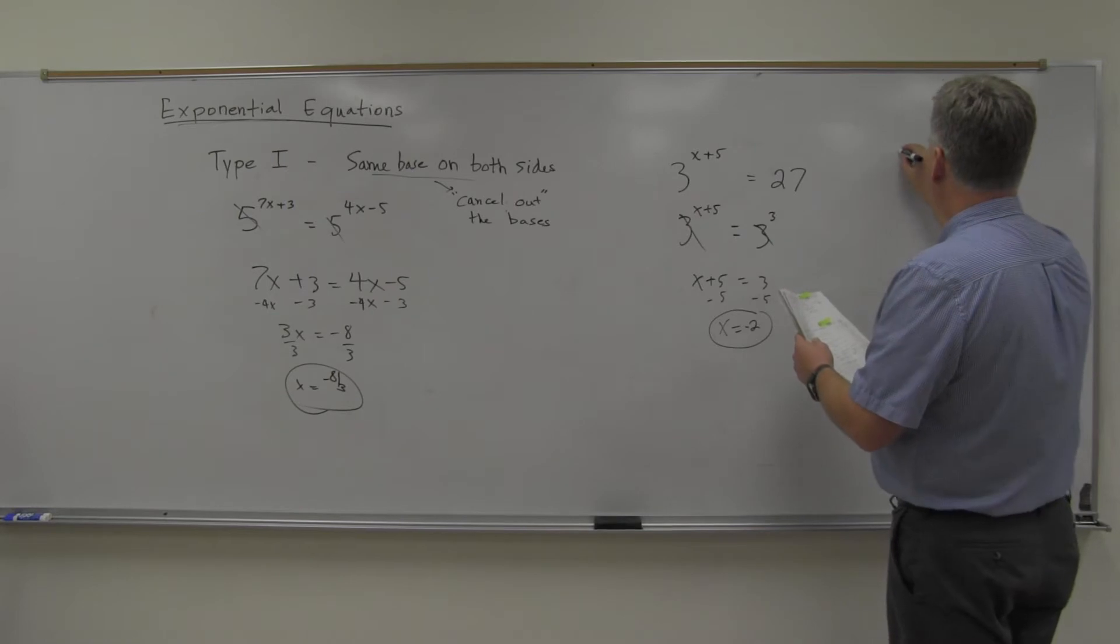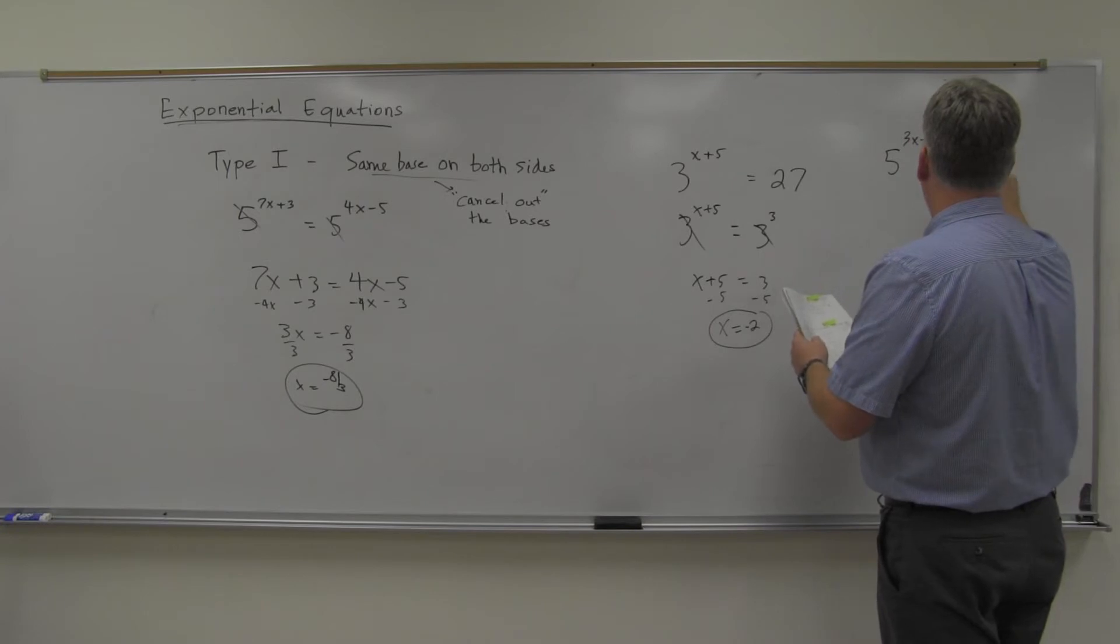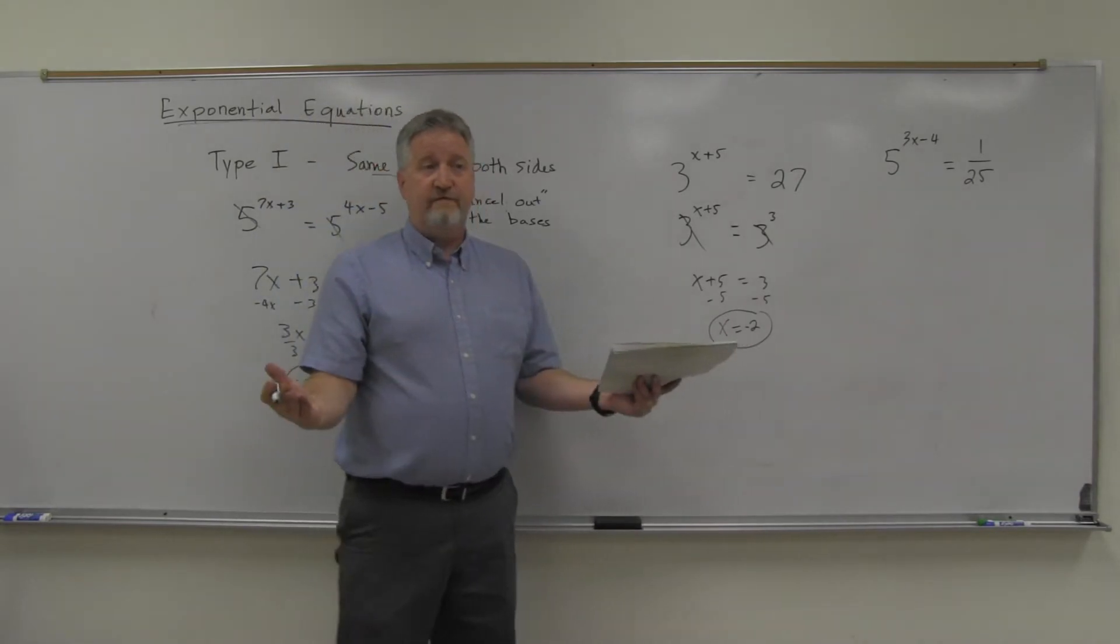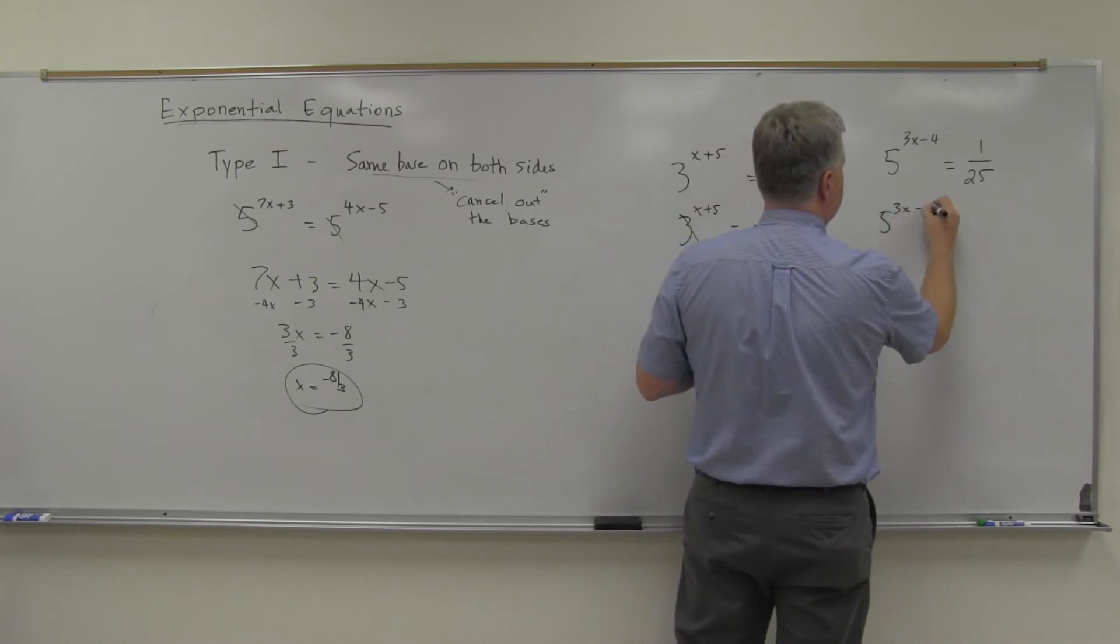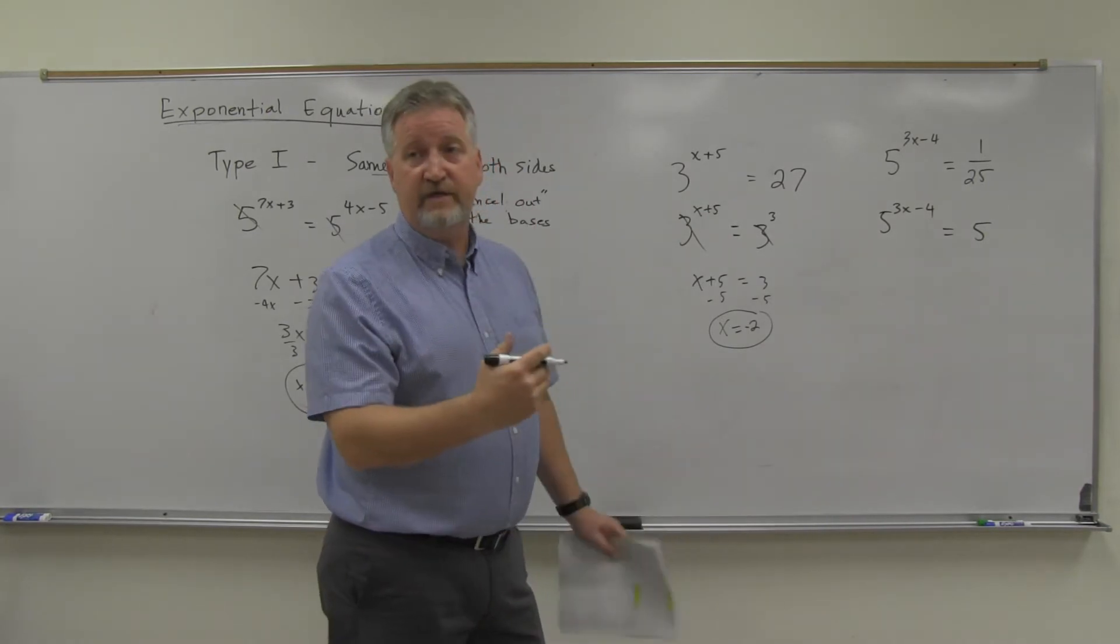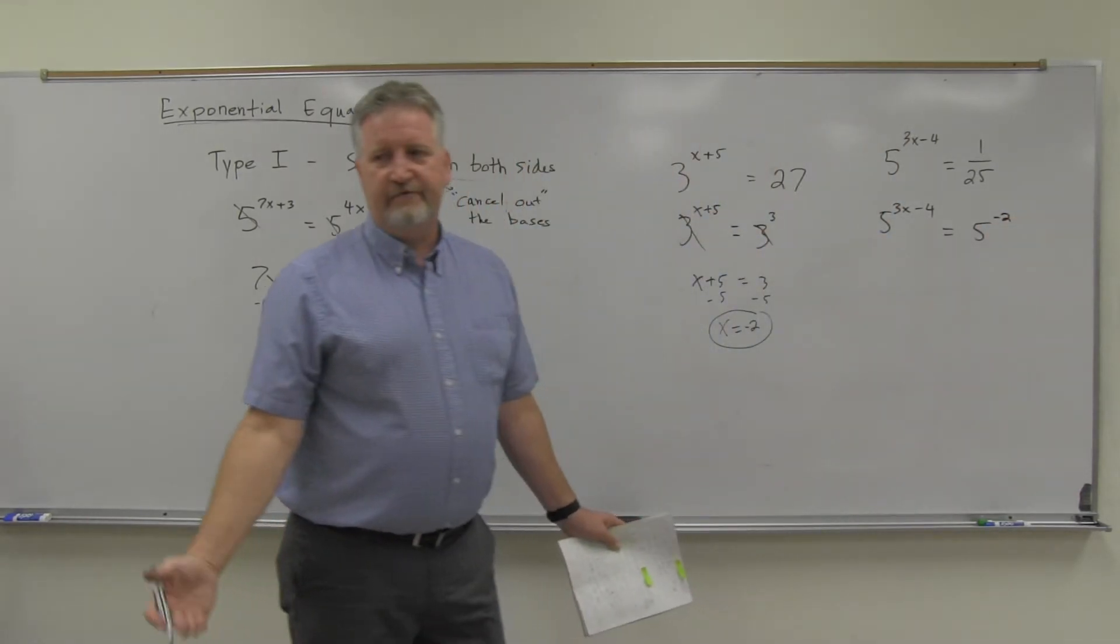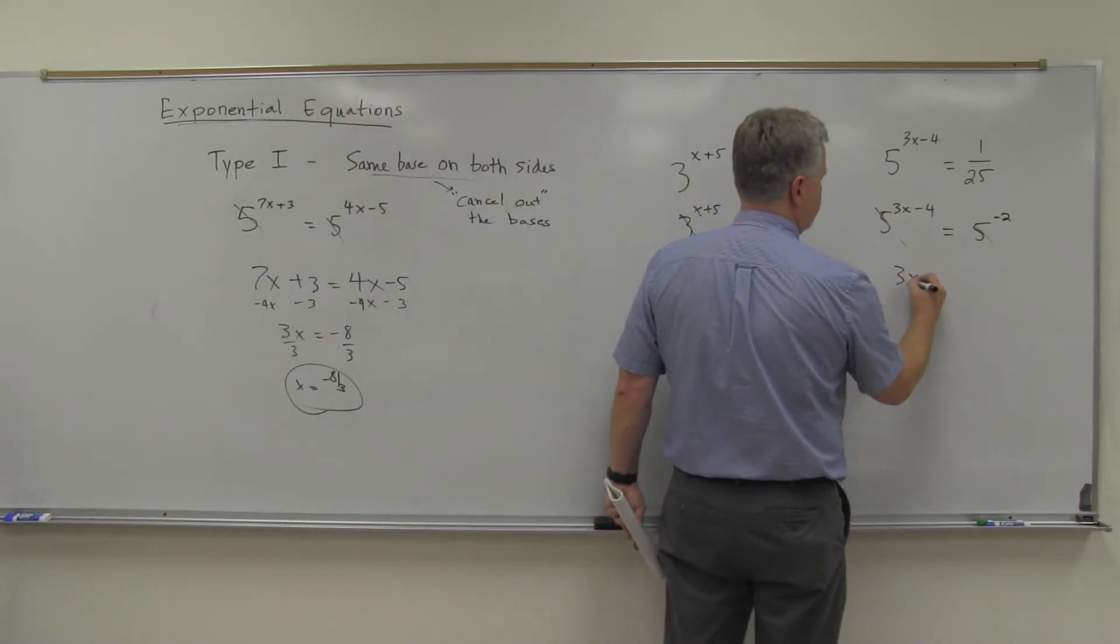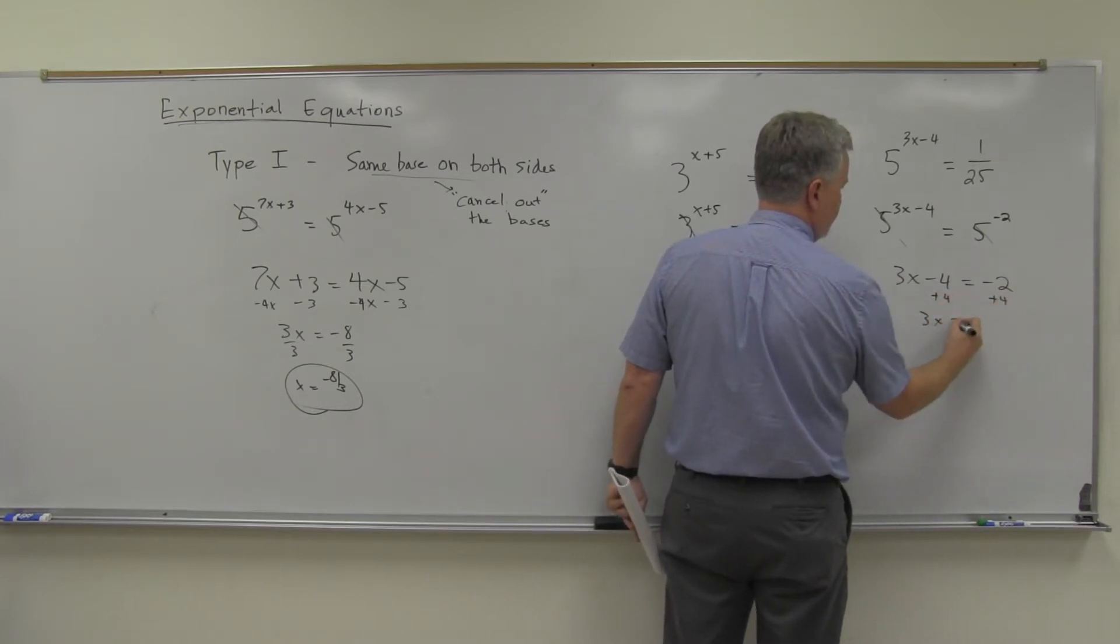So sometimes you may just have to change the number to that base. What would this one be? 5 to the 3x minus 4 equals 1 over 25. Same idea, isn't it? 25 is a base 5. It's 1 over 25, so how would I write that as 5 to a power? Well, since it's 1 over 25, it would be 5 to the negative 2. Yeah, 5 squared is 25, so 1 over 25 is 5 to the negative 2. And so then your bases cancel. So you have 3x minus 4 is negative 2, add the 4, 3x equals 2, 2 thirds.